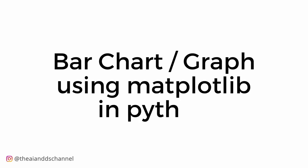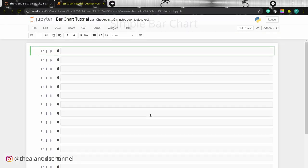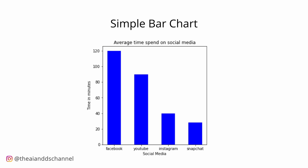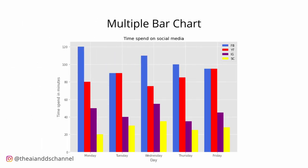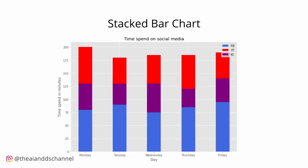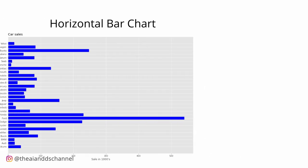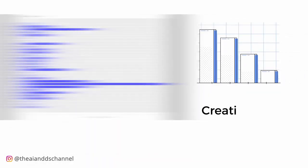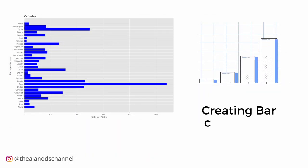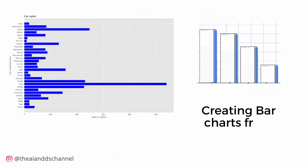The different types of bar charts covered in this video include simple bar charts, customized bar charts, multiple bar charts, stacked bar charts, horizontal bar charts, and horizontal stacked bar charts. We will also look at creating bar charts from a CSV file.